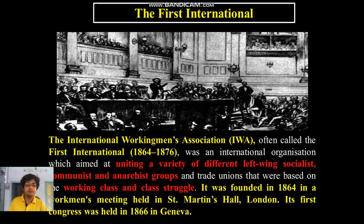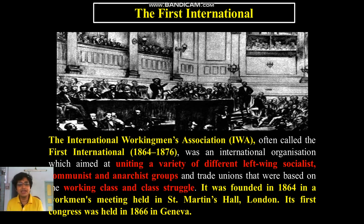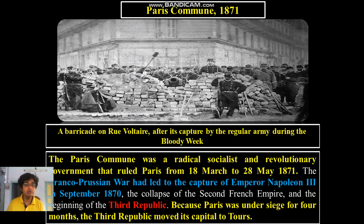The International Working Men's Association, IWA — often called the First International — was operative from 1864 to 1876. It was an international organization which aimed at uniting a variety of different left-wing socialist, communist, and even anarchist groups, those who don't believe in the conception of the state. It was founded in 1864 in a working men's meeting held in St. Martin's Hall, London. The important incident of the Paris Commune: the first radical socialist revolutionary government in the history of the world happened in Paris in 1871. The Franco-Prussian War led to the capture of Emperor Napoleon III in September 1870, which led to the collapse of the Second French Empire and the inception of the Third Republic.